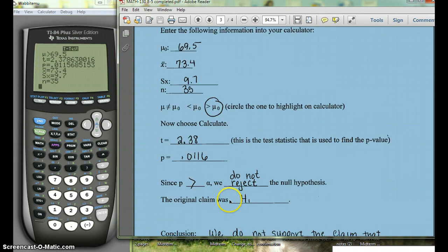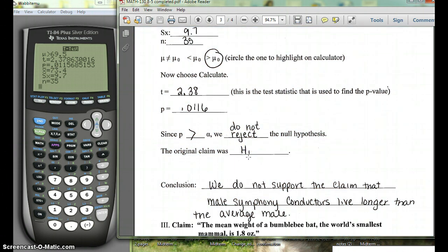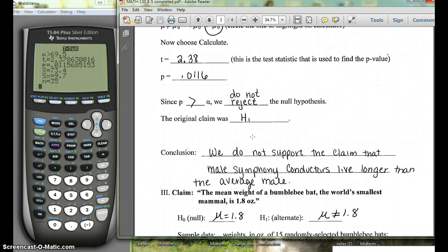So since our p-value is bigger than our alpha, we do not reject the null hypothesis. Now since our original claim was the alternate hypothesis, since we do not reject the null hypothesis, we do not support the alternate hypothesis. So we don't support the claim that male symphony conductors live longer, statistically.